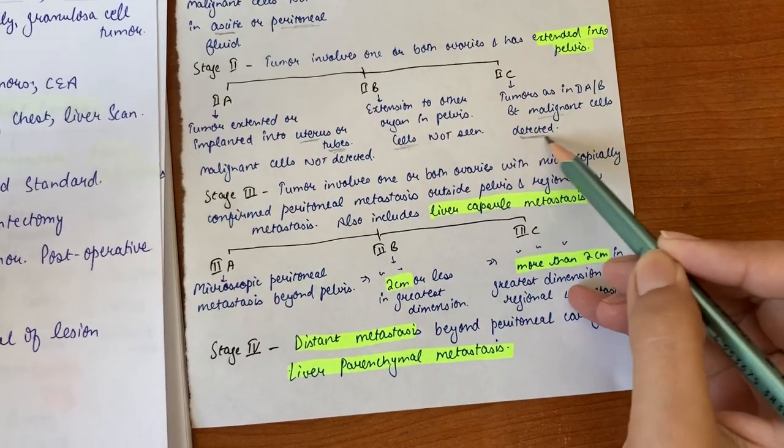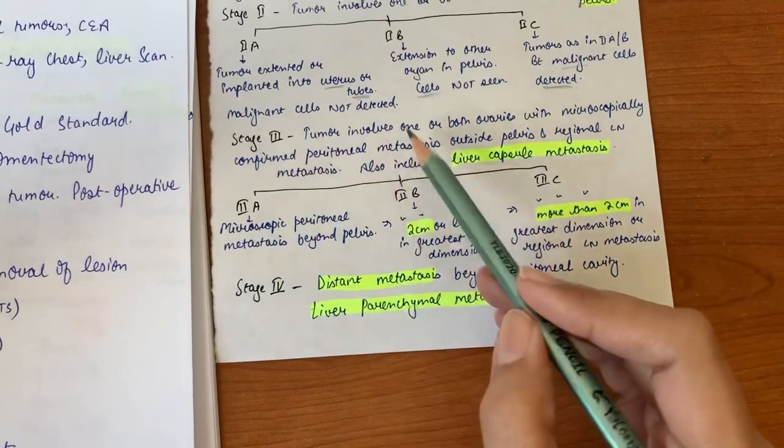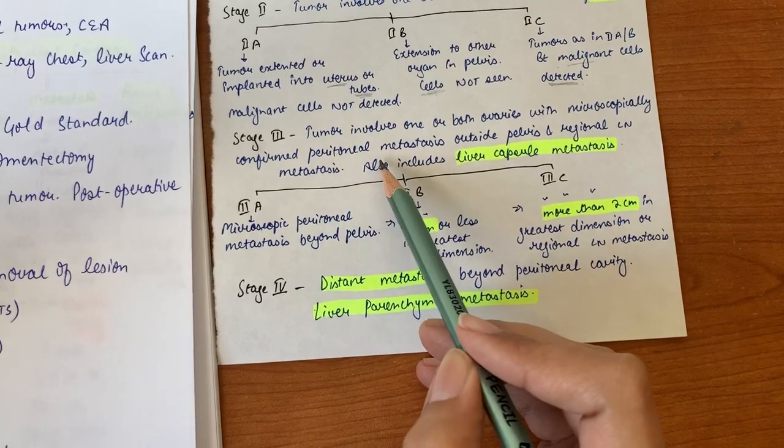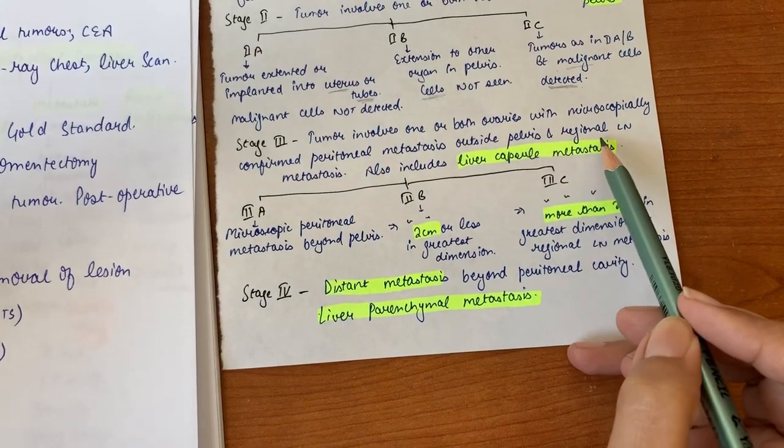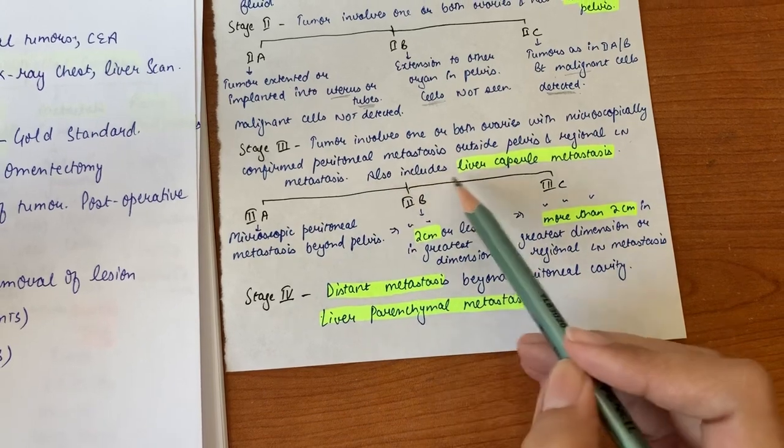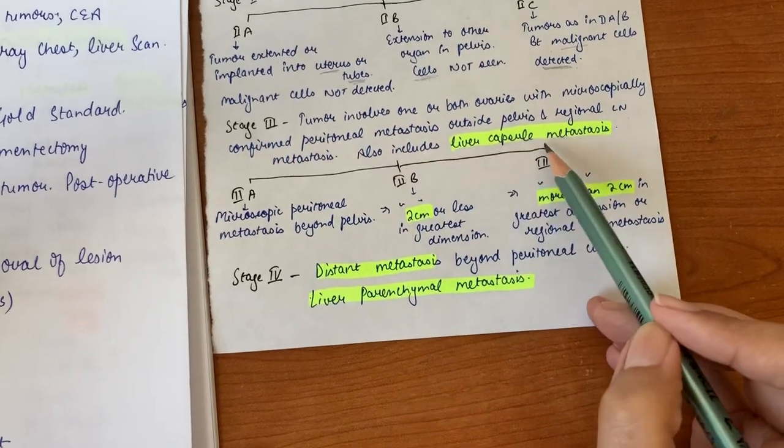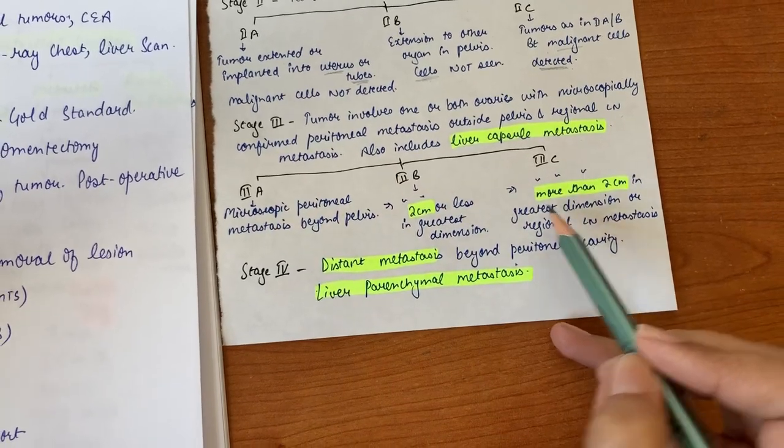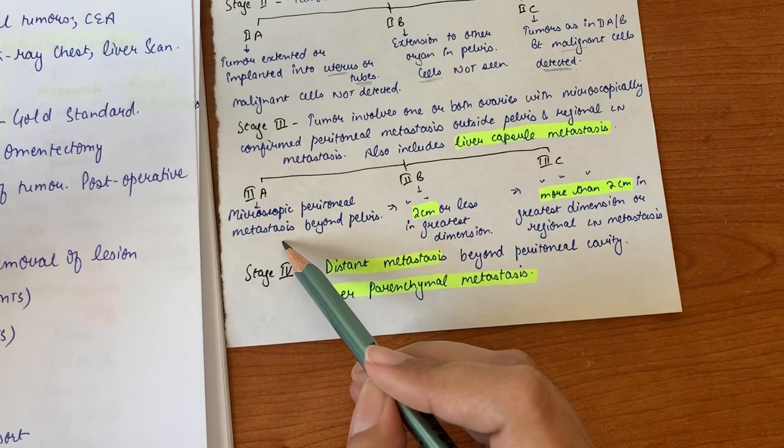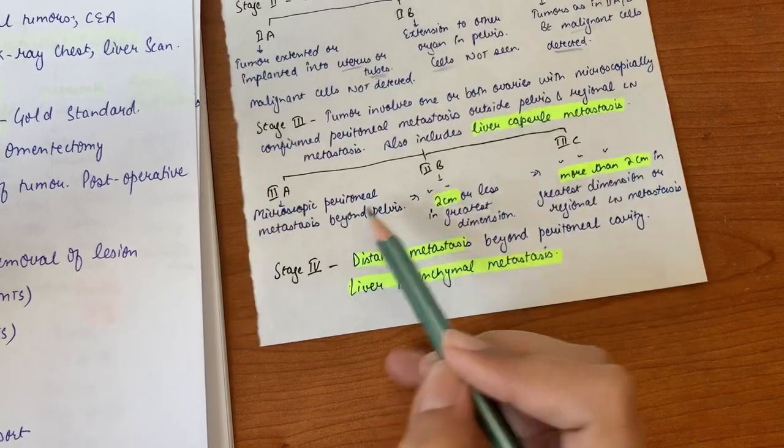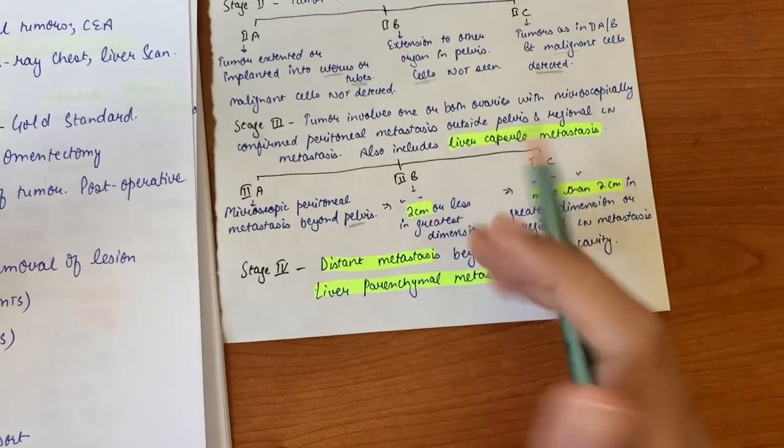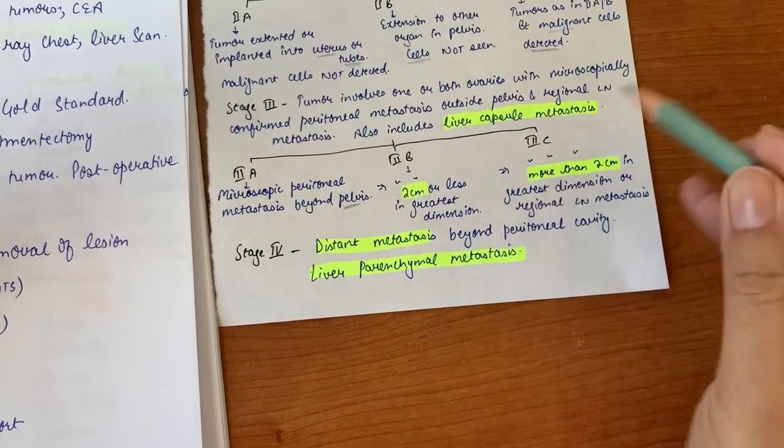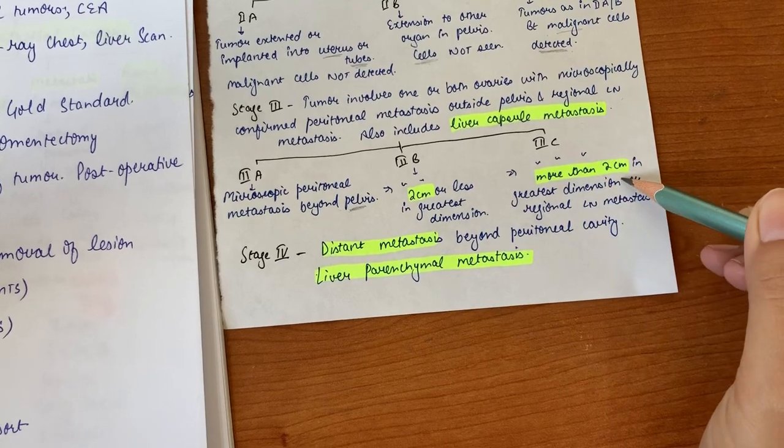In stage three, tumor involves one or both ovaries with microscopically confirmed peritoneal metastasis outside the pelvis and regional lymph node metastasis. Important thing here is that in stage three we have liver capsule metastasis. It's further subdivided into 3a, 3b, and 3c. In 3a we have microscopic peritoneal metastasis beyond the pelvis. In 3b the dimension of metastasis is less than 2 centimeters in greatest dimension. But in 3c the dimension is more than 2 centimeters and we also have regional lymph node metastasis.